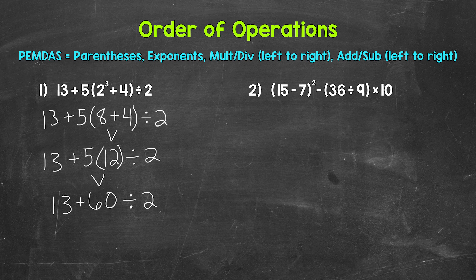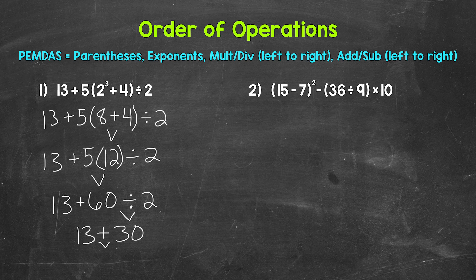Now we have 13 plus 60 divided by 2. Any parentheses? No. Any exponents? No. Any multiplication or division? Yes, we have division. 60 divided by 2 — let's do that next. 60 divided by 2 is 30. Bring down everything we did not use. So we have 13 plus 30. All we have left is addition, so that's what we end with. 13 plus 30 gives us 43. And that is our final answer.